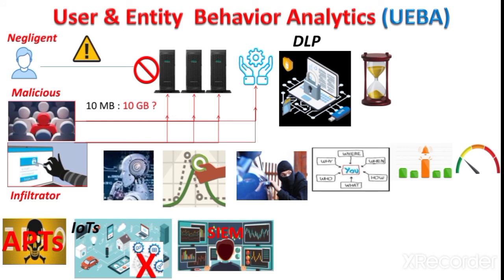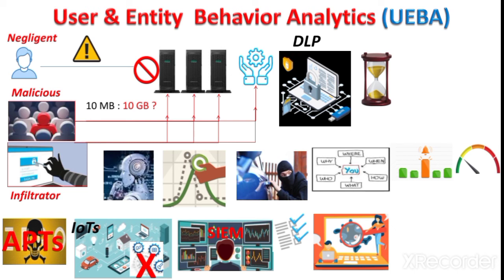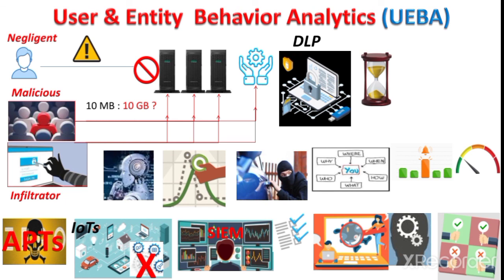The Security Information and Event Management or SIEM system collects logs from different devices and correlates this data to generate alerts based on predefined rules or predefined attack patterns. This is a limitation of SIEM solutions since they rely on predefined attack patterns, whereas in UEBA solutions, machine learning learns the attack patterns on its own, which can help remove false positives and false negatives.